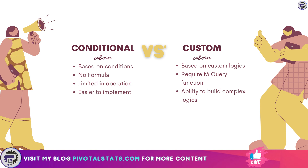Custom columns are a way to add a new column to your dataset using a formula that you define — a custom formula that you write. Conditional columns, on the other hand, are a way to apply certain pre-built conditions and use those conditions to create a new column. We'll see examples of each and how we can use them.